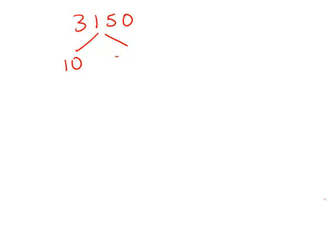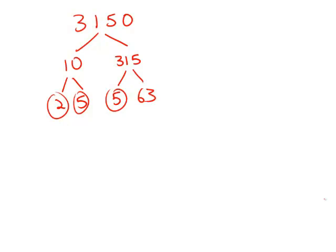So 3150 is 10 times 315. 10 is 2 times 5, those are prime factors. 315 is 5 times 63, 5 is a prime factor. 63 is 7 times 9, 7 is a prime factor. 9 is 3 times 3, those are the last two prime factors.